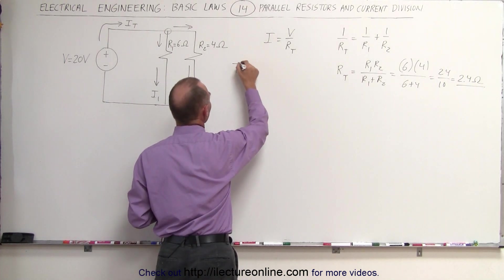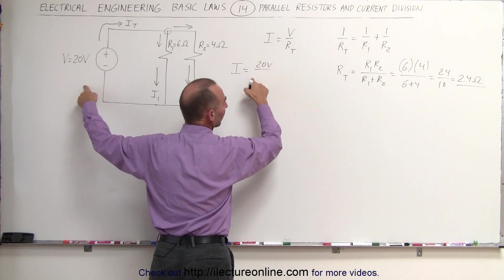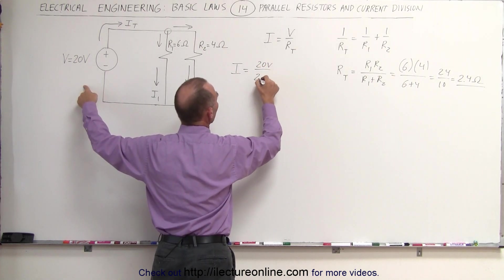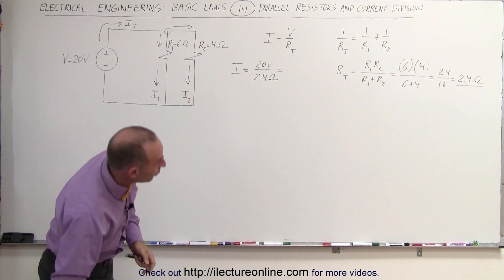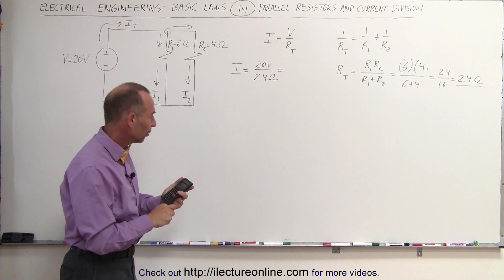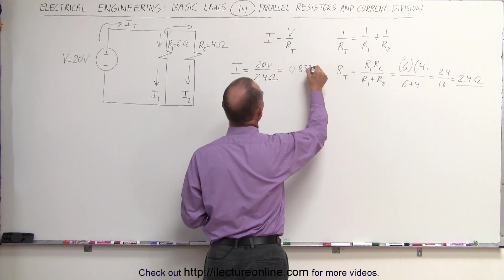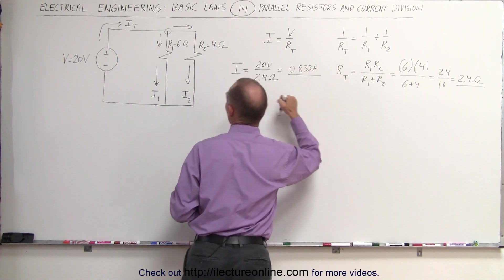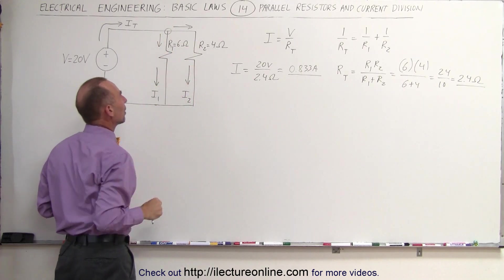Applying that here in Ohm's law, we can say I is equal to V, 20 volts, divided by R total, which is 2.4 ohms. And with a calculator, let's find out what that's equal to. 20 divided by 24 is equal to 0.833, 0.833 amps, which is the current leaving the voltage source. Now it splits up into these two branches.